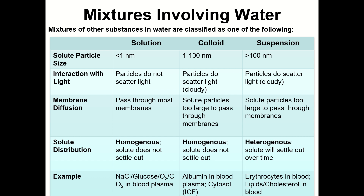Colloid particles also remain spread out in a homogenous mixture, similar to solutions, but are larger and do scatter light, making them look cloudy. Suspensions have the largest size particles and create what's referred to as a heterogeneous mixture. These particles are so large that they eventually fall to the bottom and settle out over time.